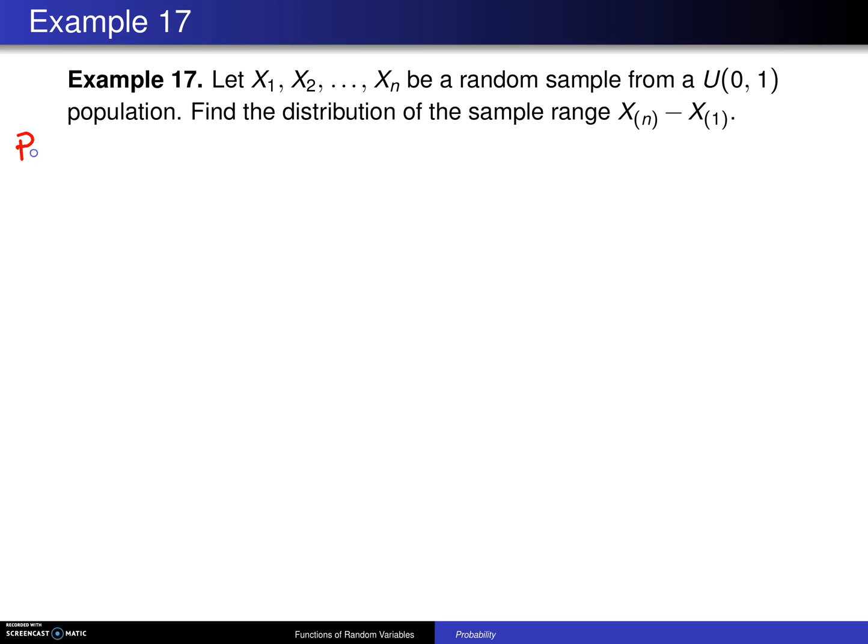We start out with the population. In this case, the population is the uniform 0, 1 distribution, exactly the same population as last time. It has a probability density function f(x) equal to 1 for x values between 0 and 1. Furthermore, it has a cumulative distribution function capital F(x), which is 0 for x less than or equal to 0, is x for x values between 0 and 1, and is 1 for x values greater than or equal to 1. Those will be used as we're trying to figure out the distribution of the sample range.